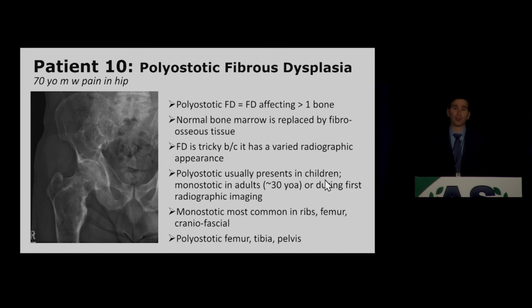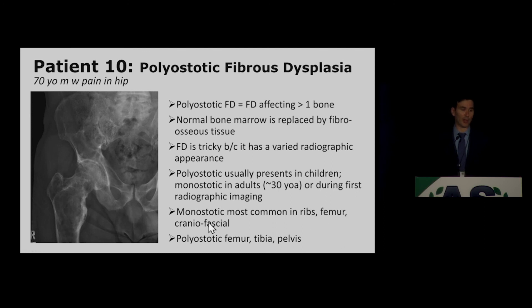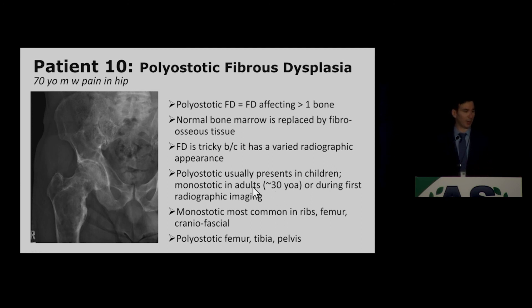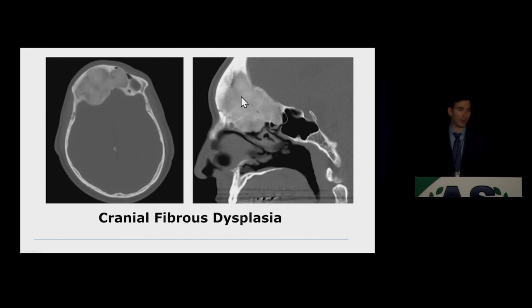Our last patient has polyostotic fibrous dysplasia — a tricky diagnosis often seen in young adults presenting for the first time for imaging. This patient had outside imaging confirming stability. Monoostotic fibrous dysplasia is more common and occurs in the ribs, femur, or craniofacial bones. For polyostotic fibrous dysplasia, if you see irregular architectural distortion with lytic regions in the femur, tibia, or pelvis, consider this diagnosis. In the head and face, fibrous dysplasia often has an expansile ground-glass appearance, which is also frequently seen incidentally in ED imaging.